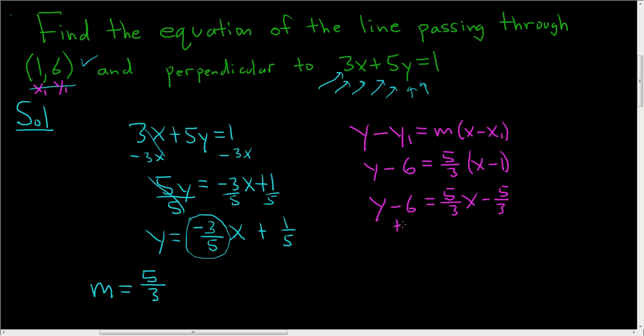Add 6 to both sides. So we end up with y equals 5 thirds x minus 5 thirds plus 6. Now we need to add these fractions. So we have to have a common denominator. We're going to multiply this by 3 over 3. So this is y equals 5 over 3 times x minus 5 over 3 plus, now 3 times 6, that's 18, and 3 times 1 is 3.